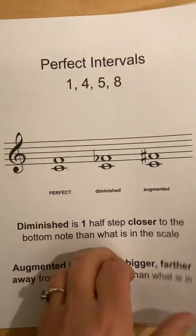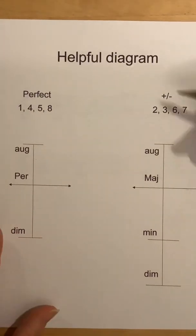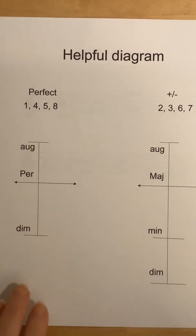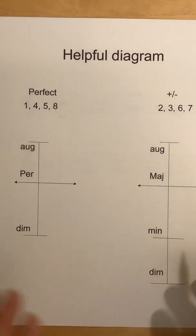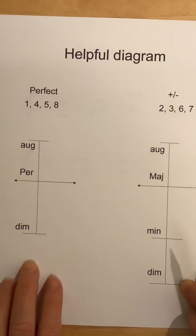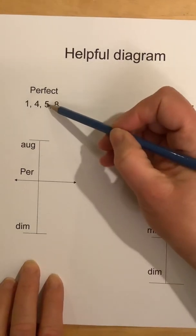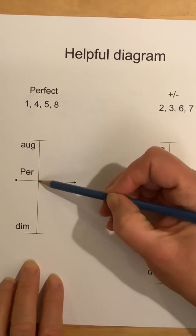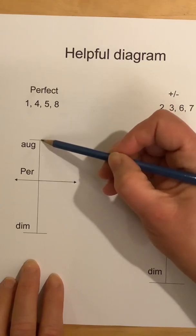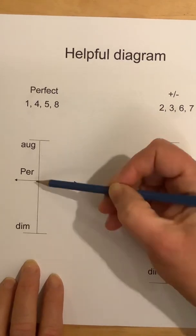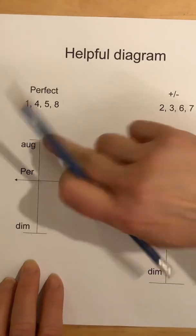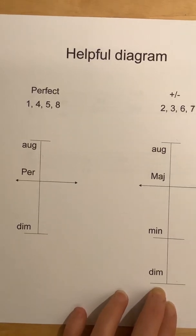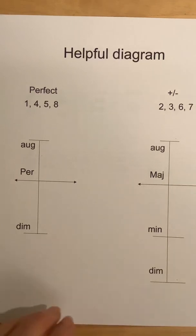There's a diagram I use which I think is very helpful — I called it a 'helpful diagram' — and my students find it helpful as well. The idea is: you have a note, say C, and you want a fifth. What's a fifth above C in scale? It would be a G — that's perfect. If it were a G-sharp, it would be augmented. If it were a G-flat, it would be diminished. Each step is a half step. Augmented is one half step farther away. We're going to use this diagram on the next page.